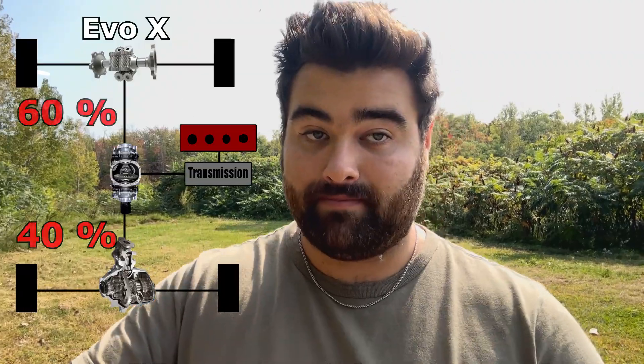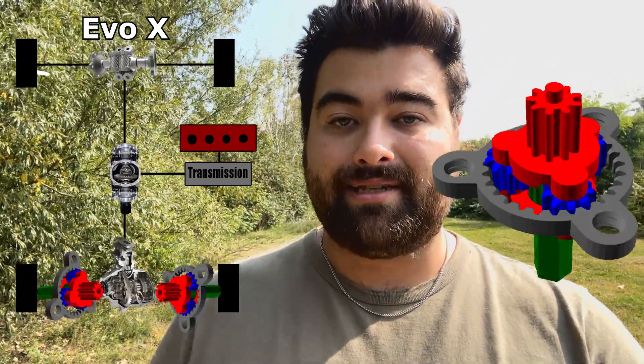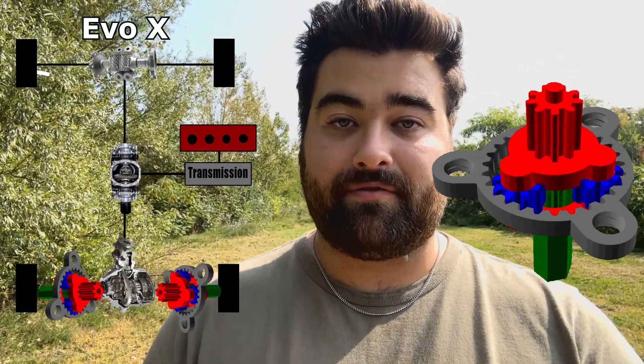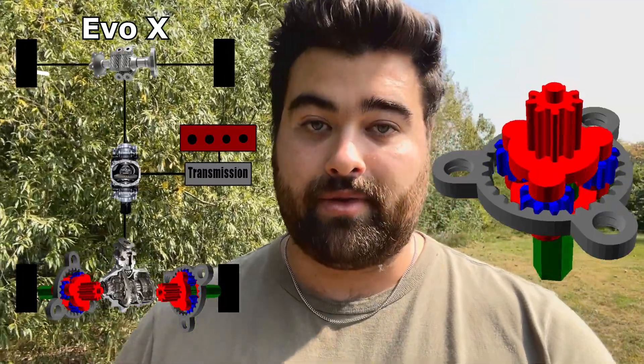As for the center differential in the Evo, it can split power from 40-60 to 60-40. The rear is really where the magic happens — it has an active yaw control system. This takes all the power sent to the back and can send 100% of it to either wheel. It does this with overdriven planetary gear sets on both sides of the differential. When it senses a wheel slipping, it engages one of those clutch packs to overdrive the wheel with grip, helping you power out of a turn. One advantage is that this dramatically improves cornering capabilities, but a drawback is that there are many more moving parts that corrode over time, making it quite costly to repair.